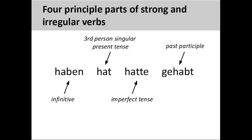In addition to regular verbs, German also has many irregular and strong verbs. These verbs have unusual variations in the conjugation of the present and imperfect tenses, as well as in the formation of the past participle. The imperfect tense is also known as the preterite, or simple past tense. Irregular verbs are sometimes also called mixed verbs.